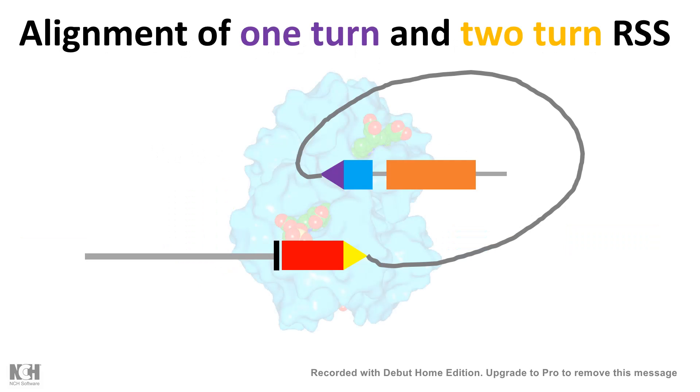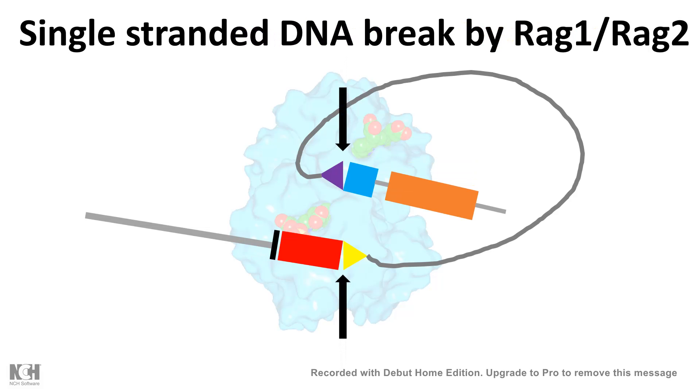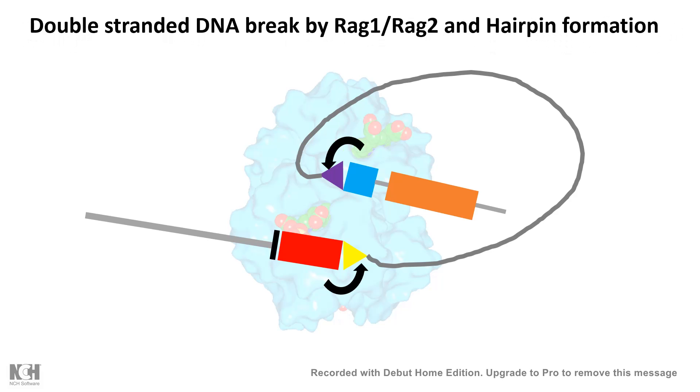These enzymes use DNA looping to pair one-turn and two-turn RSS inside their active site. RAG1 and RAG2 cleave the single strand, and the cleaved sequences form hairpins. This is followed by a double-stranded DNA break by RAG1 and RAG2.